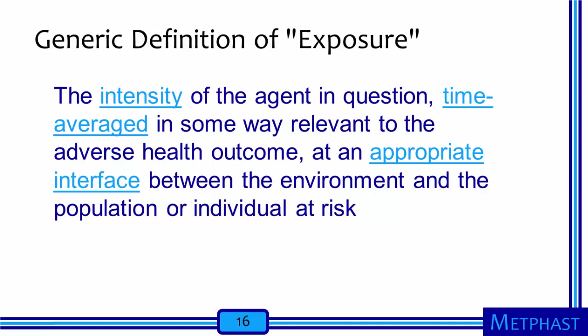Let's introduce some general concepts regarding exposure and dose. Exposure can be defined generically as the intensity of the agent in question, time averaged in some way relevant to the adverse health outcome, at an appropriate interface between the environment and the population or individual at risk. Part of exposure is the amount of some potentially hazardous agent, and there is also a time component. A higher exposure can occur if either a greater amount of an agent is present, or if a worker is in the presence of the agent for a longer time. Exposure must be measured at the interface of the person with the surrounding environment — often we locate a sampler in the breathing zone of a worker by hanging it on a worker's collar.